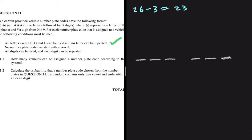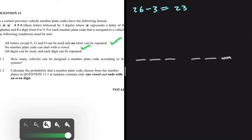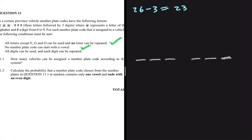The next condition is that no number plate code can start with a vowel. The vowels are A, E, I, O, and U — five vowels. From our first condition, E and O cannot be used, so we are only left with three vowels: A, I, and U.